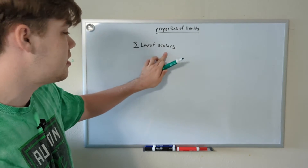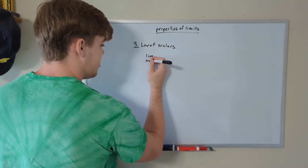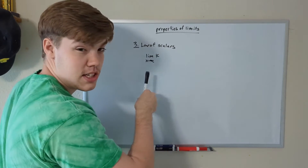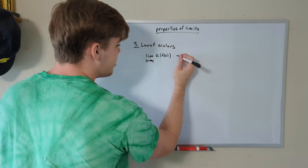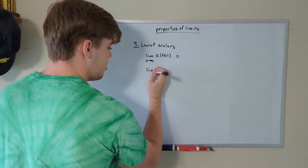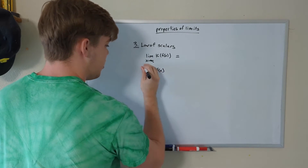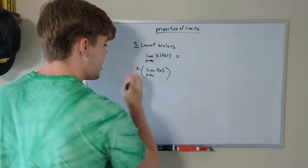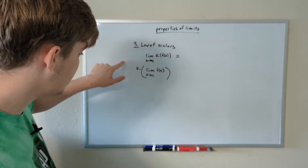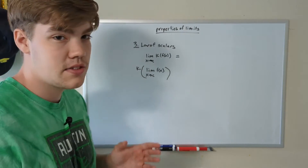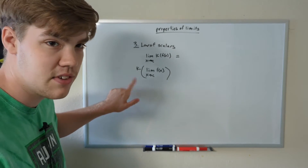Our third law is the law of scalars. This law states that the limit as x approaches c of k times f of x — where k is some constant and f of x is our function — is equal to the limit as x approaches c of f of x, all multiplied by k. In other words, we can pull a constant or scalar out of the function and bring it to the front, allowing us to find the limit first and then simply multiply it by whatever we pulled out.